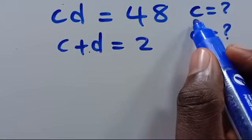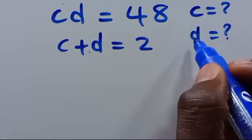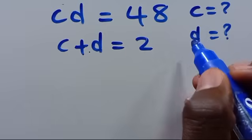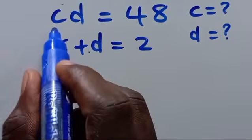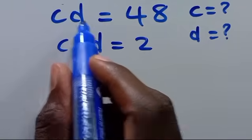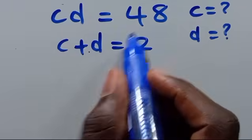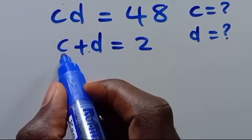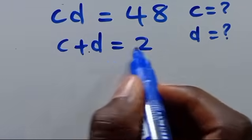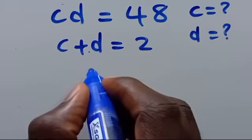What is the value of d and c, given that cd equals 48 and c plus d equals 2?